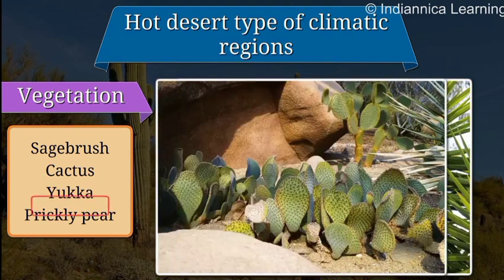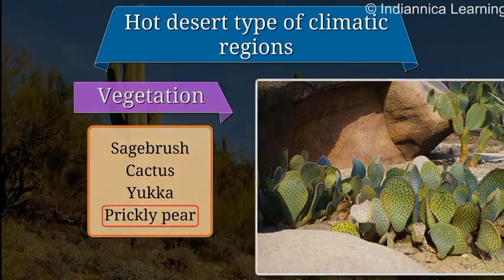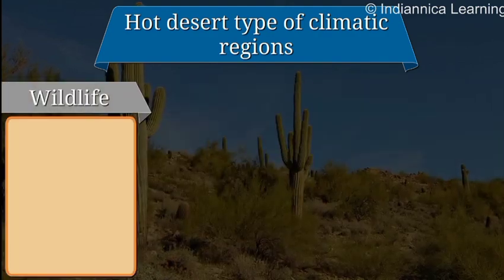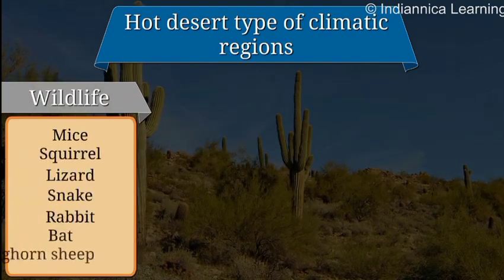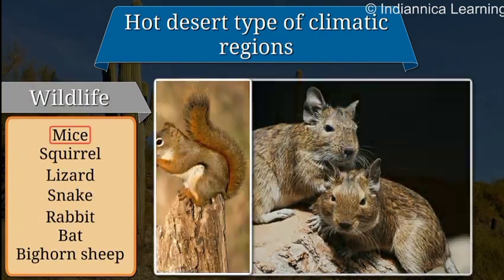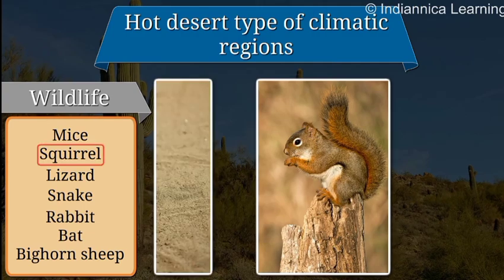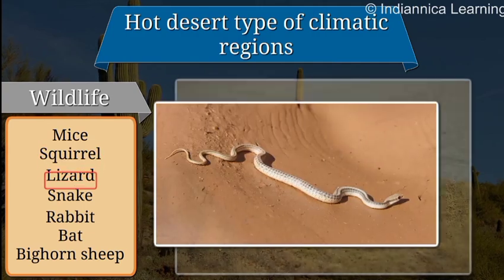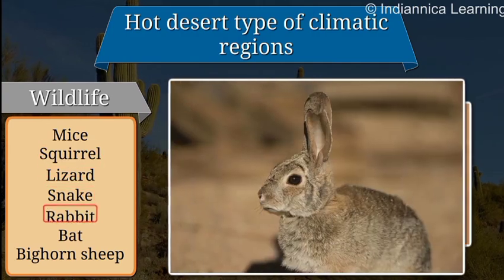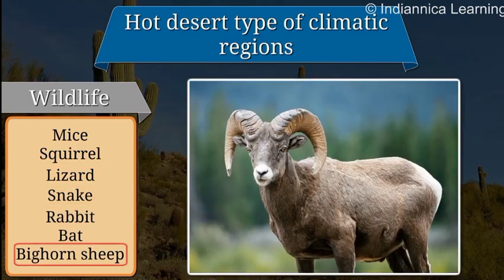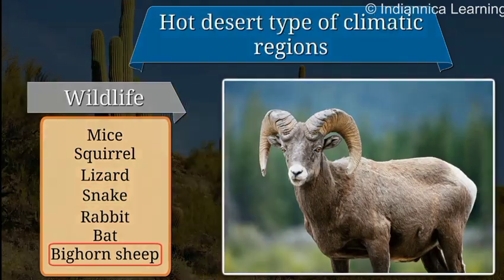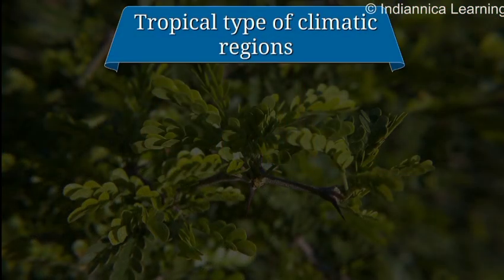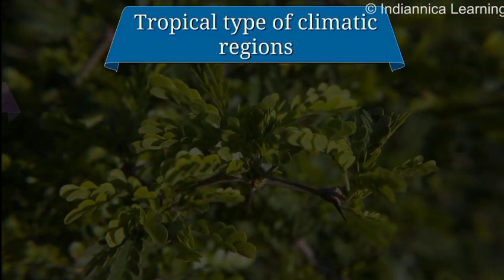Hot desert type: The regions with the hot desert type of climate consist of sagebrush, cactus, yucca, and prickly pear. The wildlife here includes mice, squirrel, lizard, snake, rabbit, badger, and bighorn sheep.